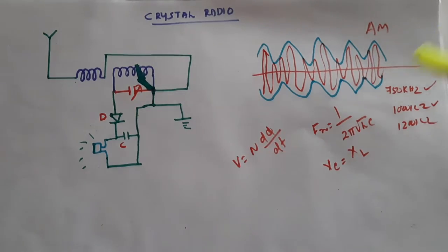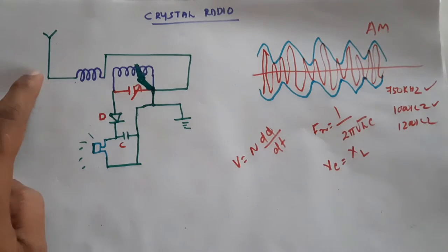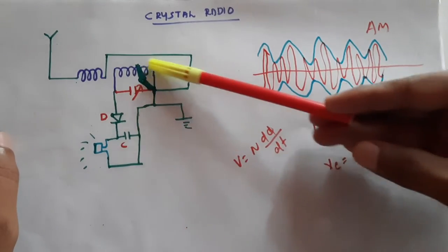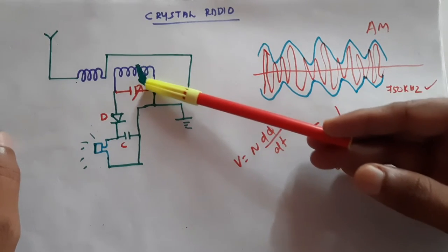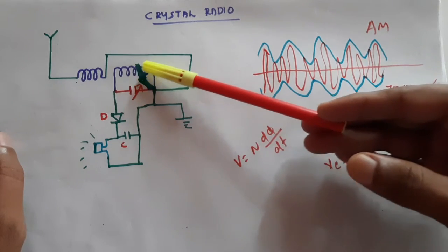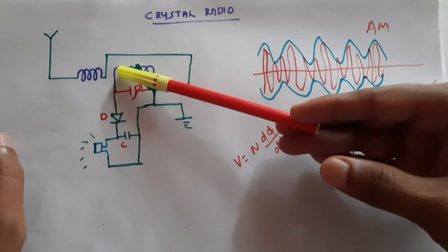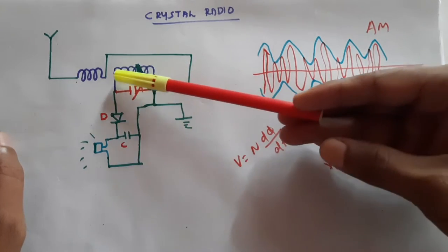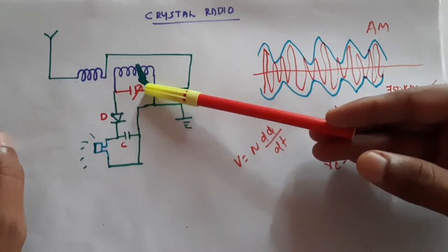Hello and welcome. Today we are going to see how a crystal radio works. This is the simple circuit of a crystal radio. Here we can see that two coils are wound — this is a tuned circuit. It consists of an inductor and a capacitor. We can change the value of the inductor by moving this sliding contact, which changes the number of turns and therefore the value of the inductance.